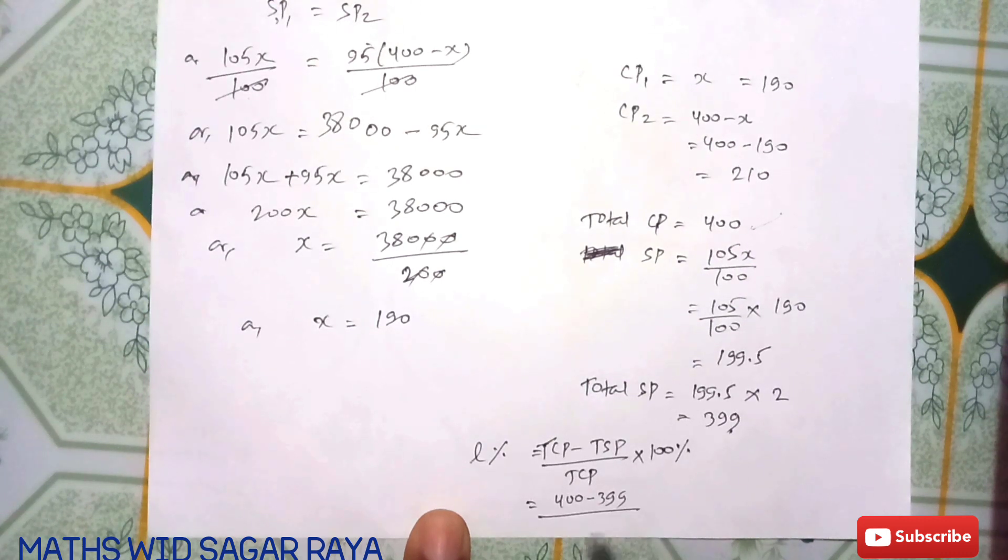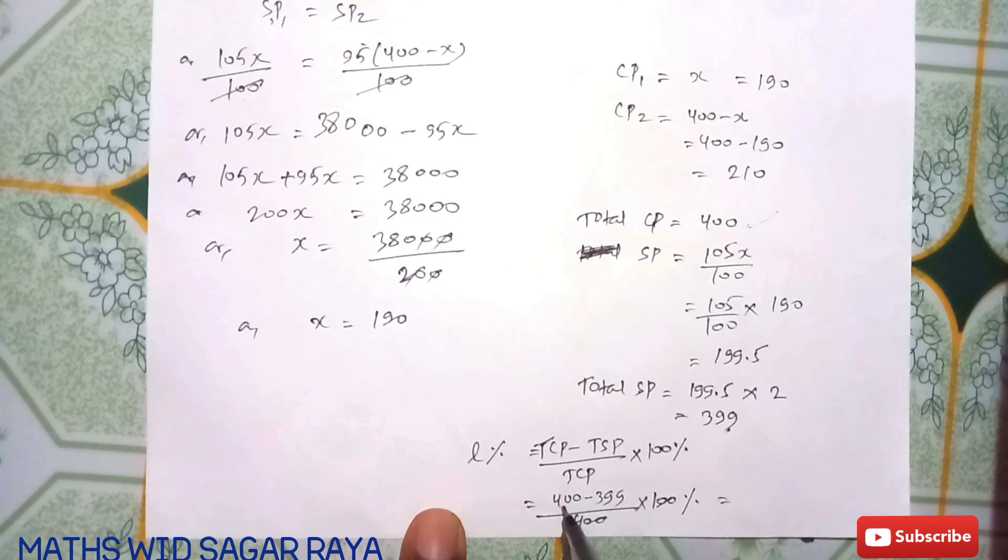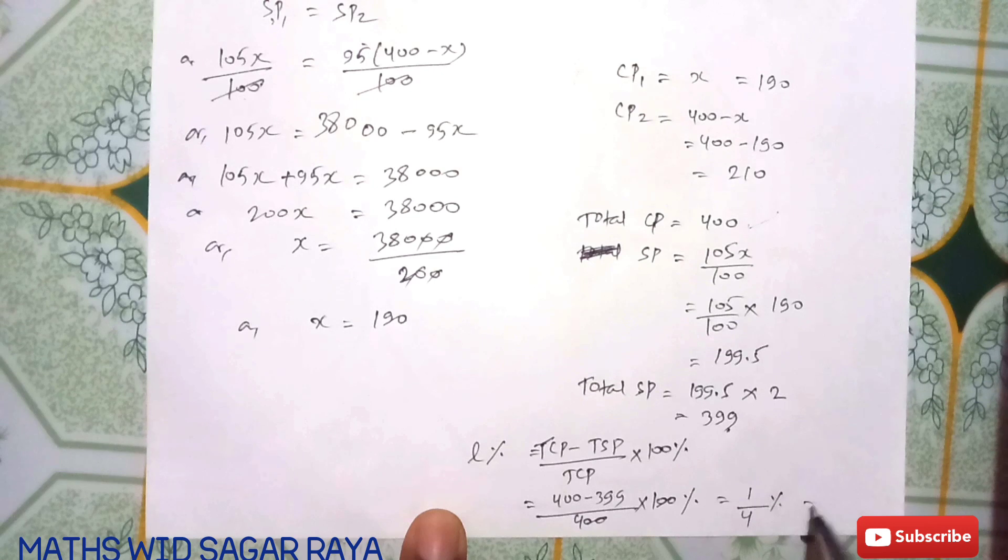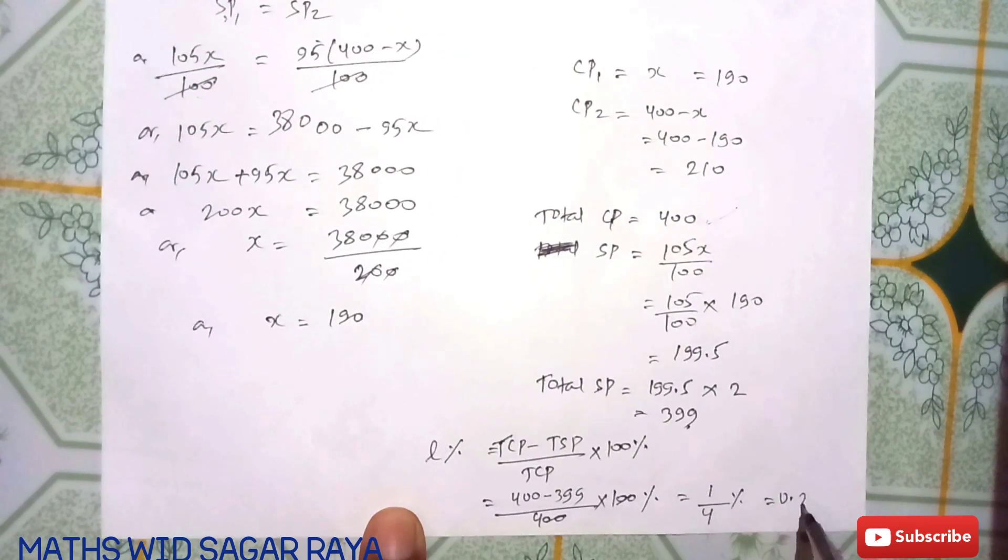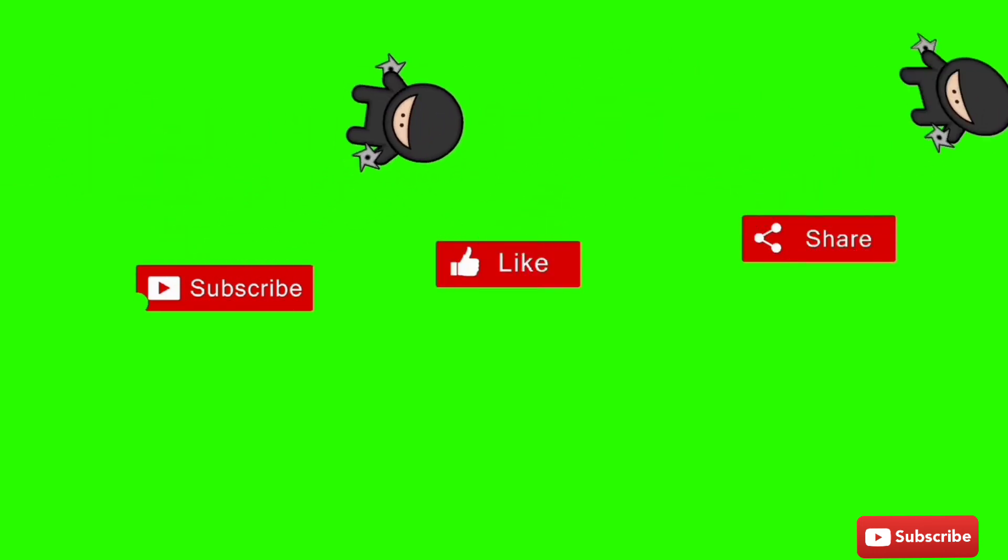Total CP = 400, total SP = 399. Loss % = (400 - 399) / 400 × 100% = 1/4% = 0.25%. Please subscribe, like, and share my videos. See you soon with more educational videos. Thank you!